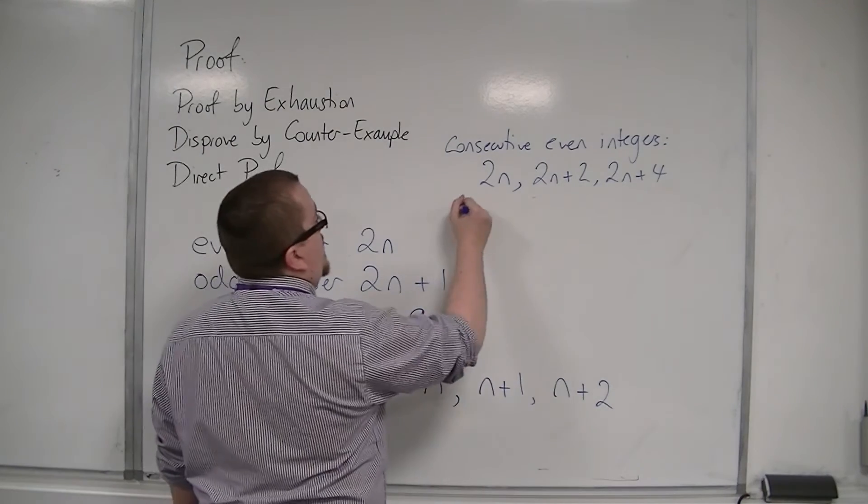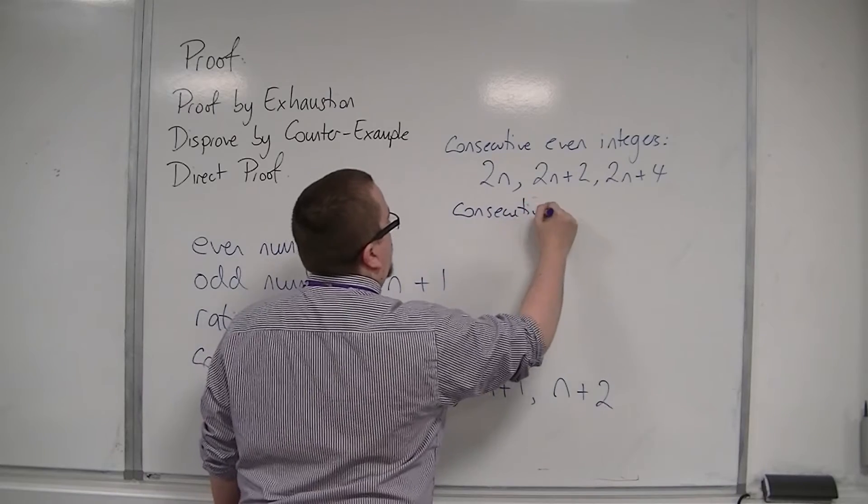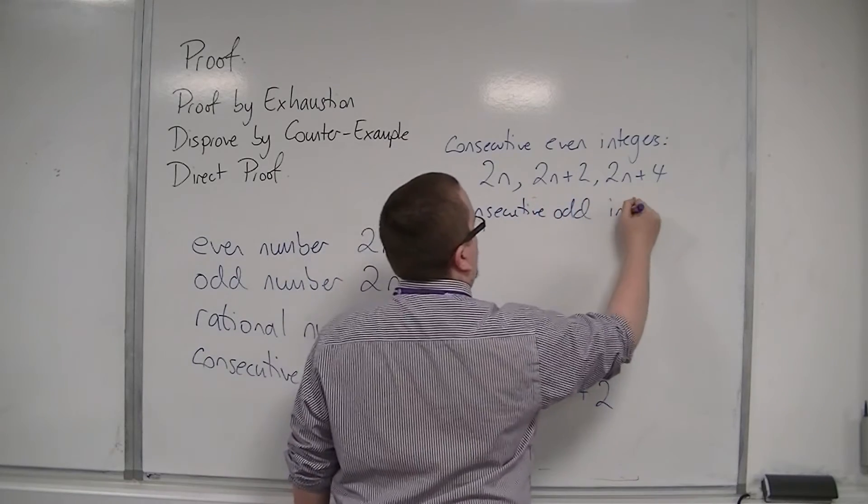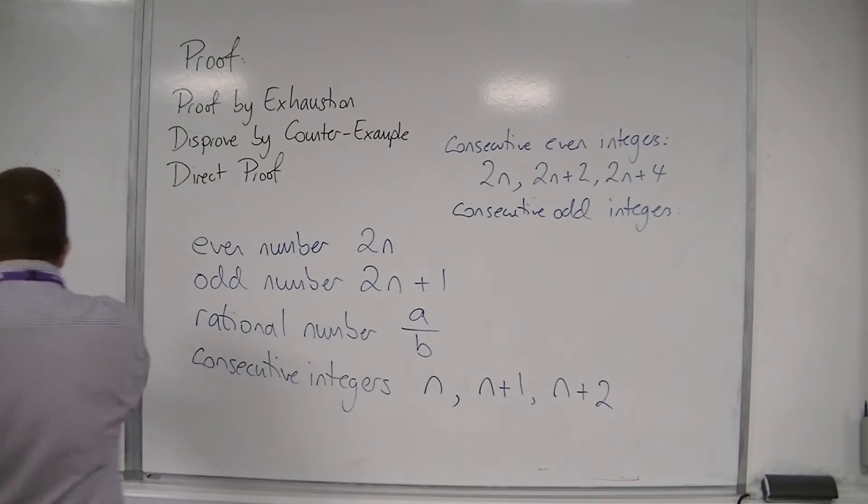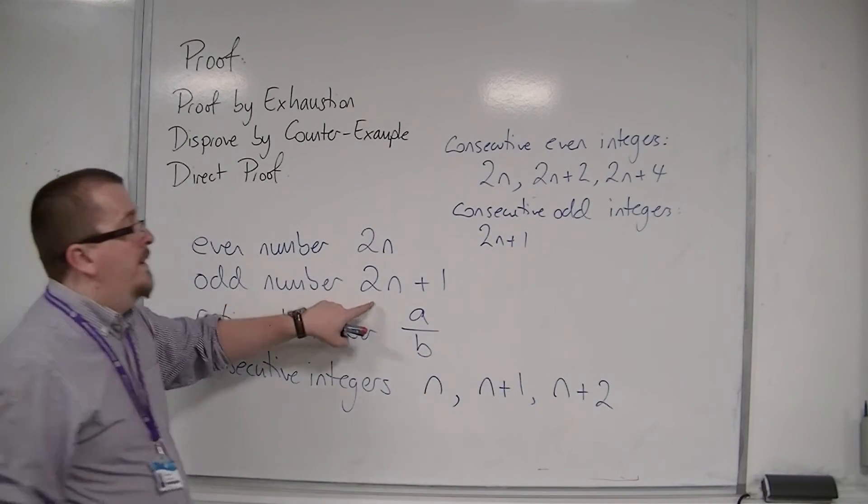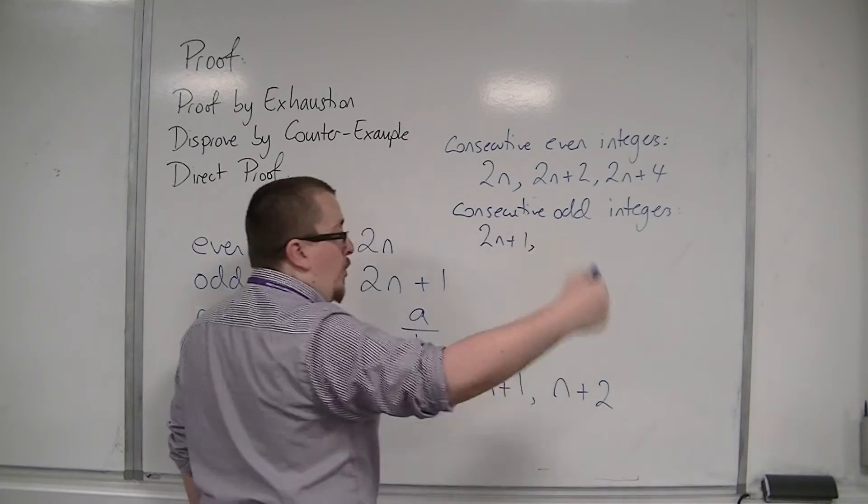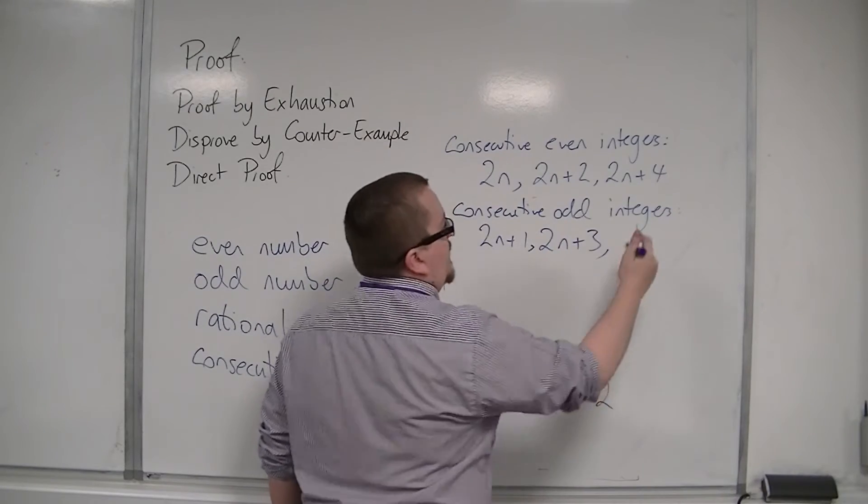If you were looking at consecutive odds, then you could have your 2n plus 1. So that's what we represented as an odd number there. And then the next odd number along is 2 along that, so 2n plus 3. And then add another 2, so 2n plus 5.